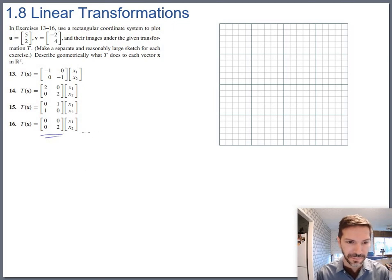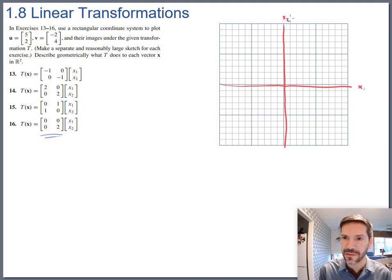Describe geometrically what T does to each vector. So let's first of all plot the initial vectors u and v. So u is the vector 5, 2. Let's get axes going here. There's the x1 axis and the x2 axis. So u is 5, 2. So that would be 1, 2, 3, 4, 5 over and 2 up right there. There's u. And let's also get v plotted. v is negative 2, 4. So negative 2 over 1, 2, 3, 4 up about right there. There's v.